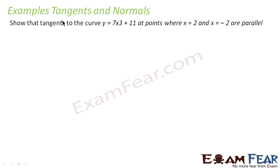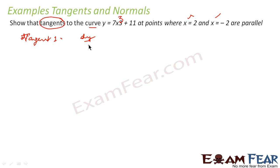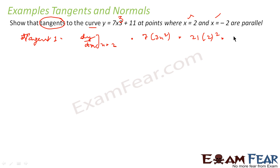Here we have to show that the tangents to the curve at these points are parallel. This is x cube — y = 7x³. I have to find the tangents to this curve at these points and prove that they are the same. So, tangent 1 is dy/dx at x = 2. Differentiating 7x³ gives 7 × 3x², which at x = 2 becomes 21 × 4, that is 84.